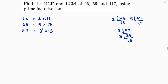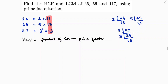Now for the HCF — HCF is the product of common prime factors. Looking at all three numbers, the only common prime factor is 13, so the HCF is 13.